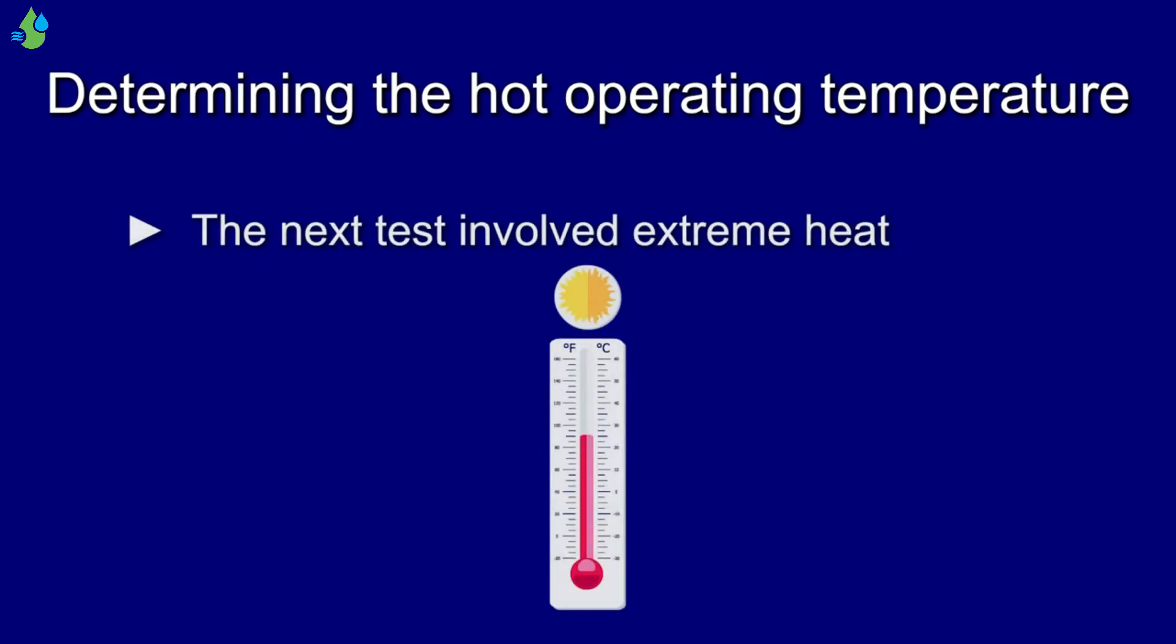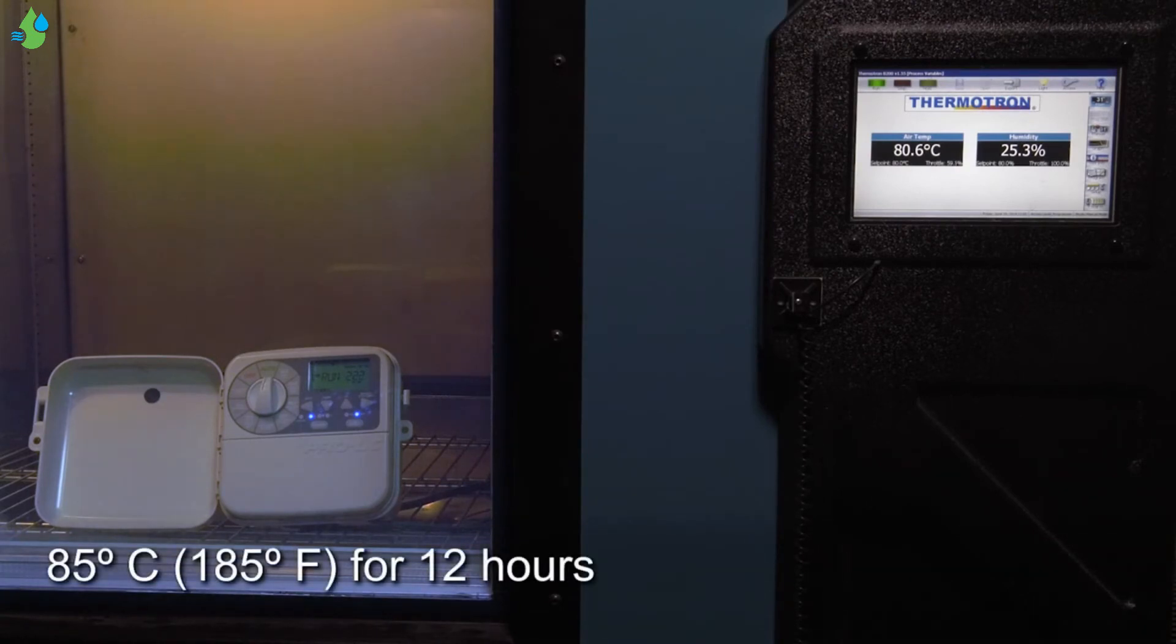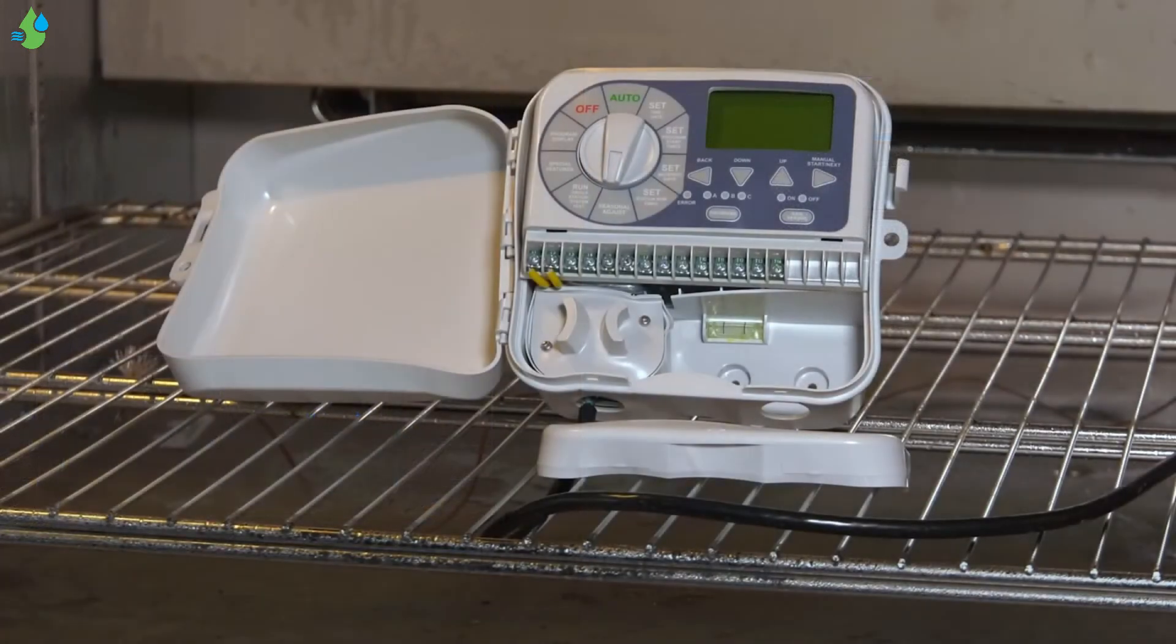Determining the Hot Operating Temperature. The next test involved extreme heat. The temperature was raised to 85 degrees centigrade, 185 degrees Fahrenheit, and left to run for 12 hours. This unit reported no issues.